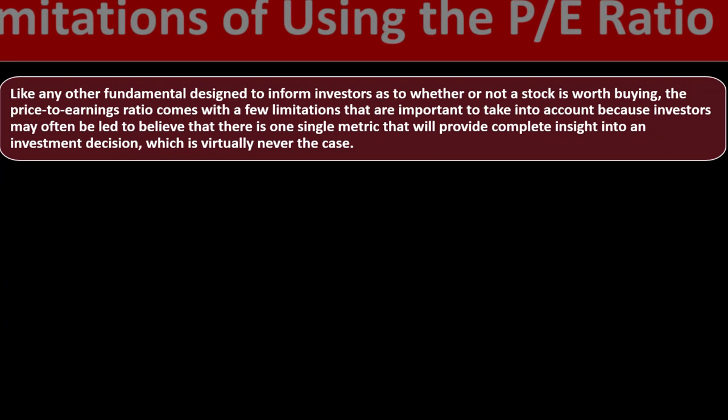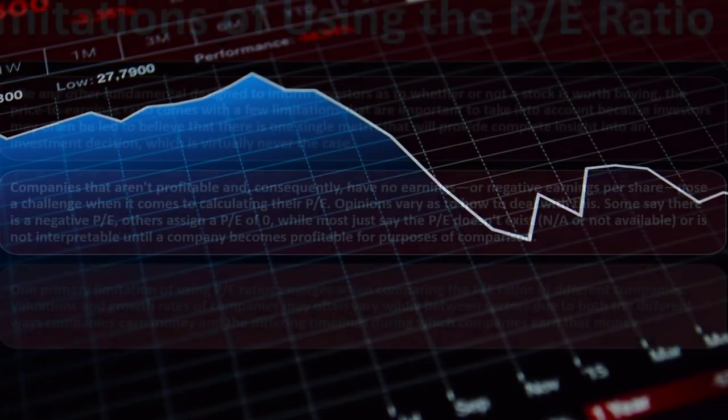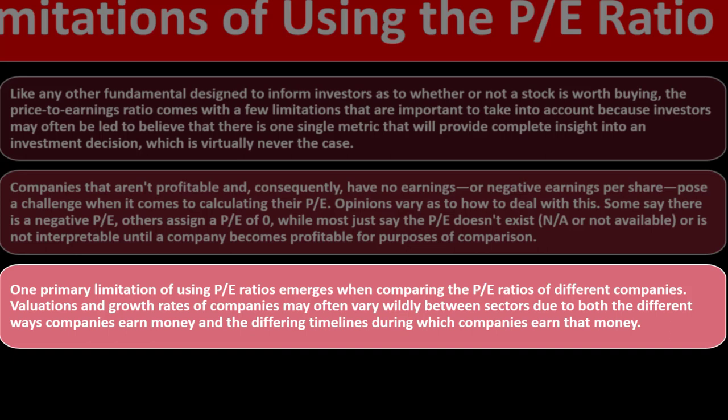Like any fundamental metric, the P/E ratio comes with limitations. Investors may often be led to believe that one single metric will provide complete insight into investment decisions, but no one metric can do it all. Companies that aren't profitable and have no earnings or negative EPS pose a challenge when calculating their P/E — some say there is a negative P/E, others assign zero, while most say the P/E doesn't exist. A primary limitation also emerges when comparing P/E ratios of different companies, since valuations and growth rates may vary widely between sectors due to different ways companies earn money and differing timelines.